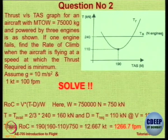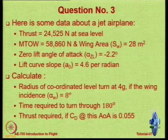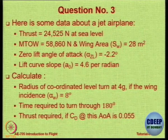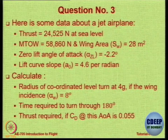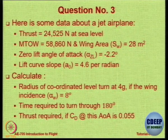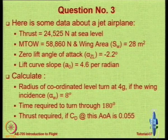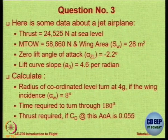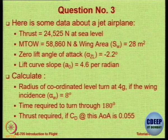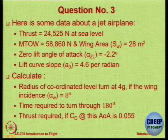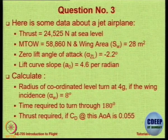Question number 3 is regarding turning flight. Please note down the data: sea level thrust is 24,525 newtons, max takeoff weight is given, wing area is given, zero-lift angle of attack is −2.2°, and the lift curve slope is 4.6 per radian. We need to calculate the radius of a coordinated steady level turn at 4G, where the wing incidence is 8°. Then, what is the time required to turn through 180 degrees?